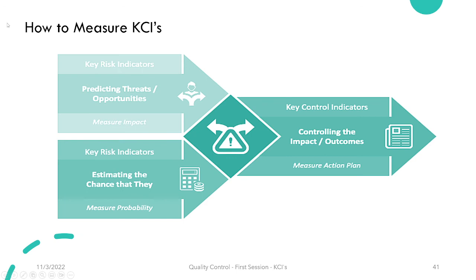To measure KCIs, we use Key Risk Indicators as a basis. First we measure impact — predicting threats and opportunities. Then we measure probability — estimating the chance that these impacts could affect our organization. From those two, we derive the action plan, which is the KCI — controlling the impact and outcomes through measured impact and measured probability. This clearly identifies the relationship between KCI and KRI.